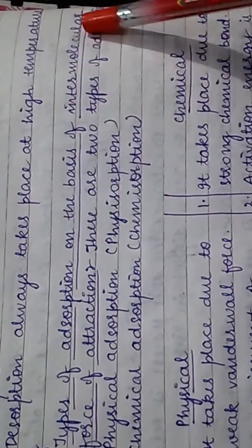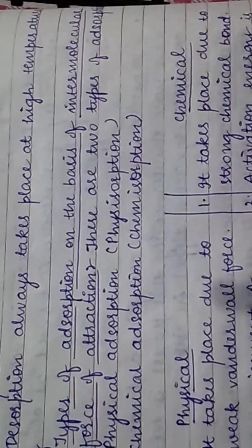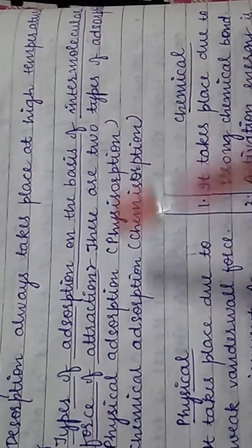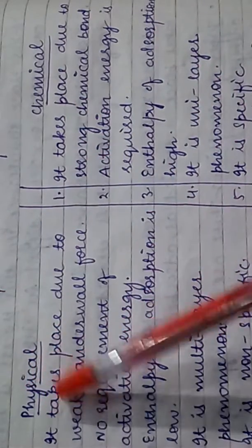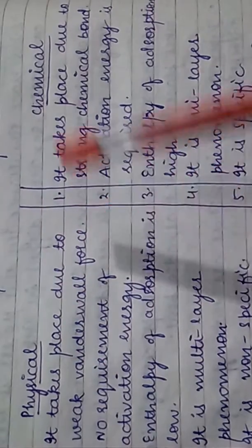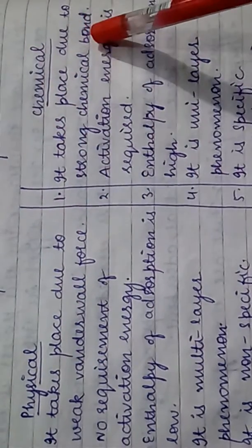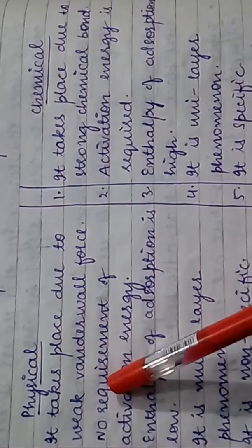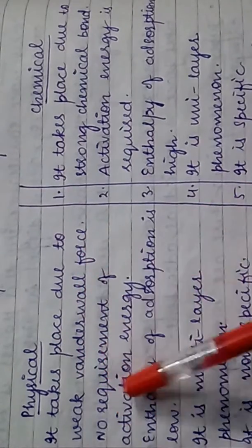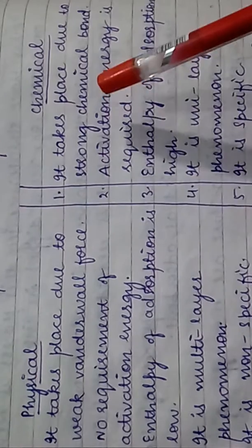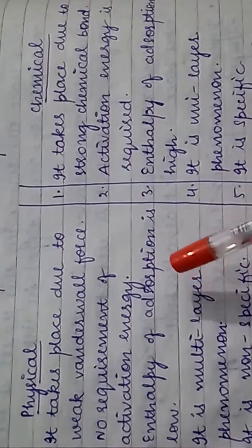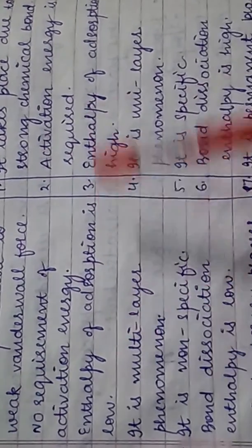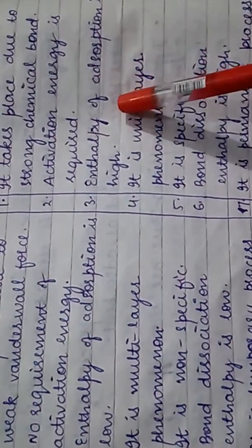On the basis of intramolecular force of attraction, we have two types of adsorption: physical adsorption called physisorption, and chemical adsorption called chemisorption. Physical adsorption takes place due to weak Van der Waals forces, whereas chemical adsorption takes place due to strong chemical bonds. Physical adsorption may not require any activation energy, whereas chemical adsorption may require activation energy. Enthalpy of adsorption in physisorption is low, whereas enthalpy of adsorption in chemisorption is high.